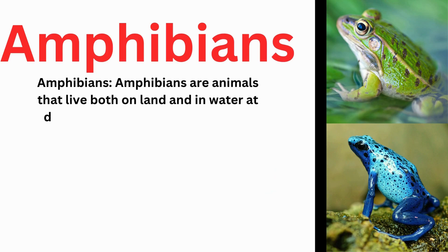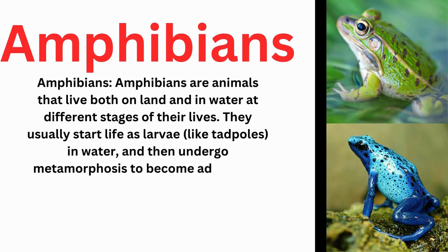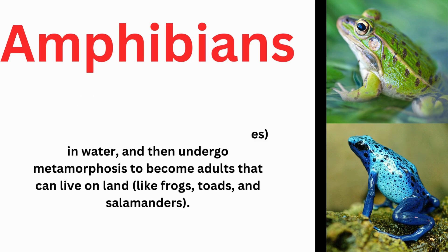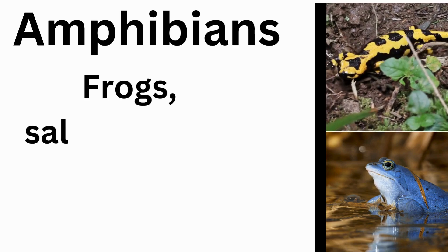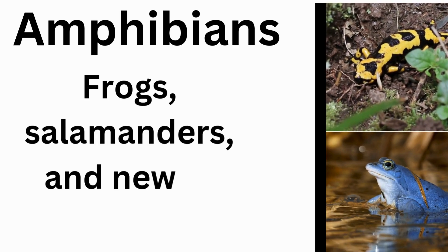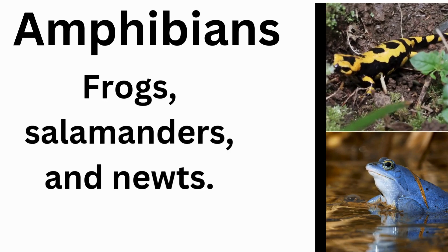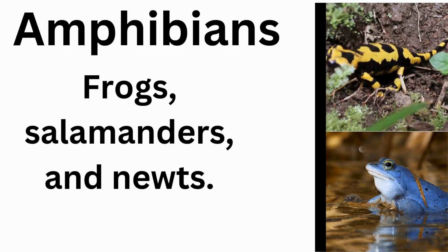Amphibians are animals that live both on land and in water at different stages of their lives. They usually start life as larvae, like tadpoles, in water. Examples include frogs, salamanders, and newts.